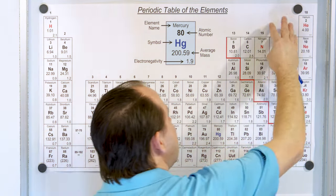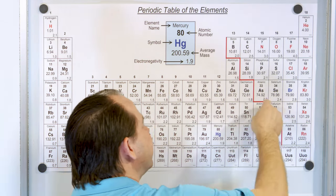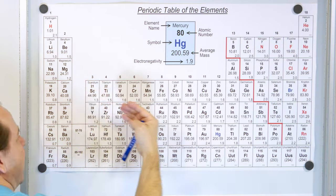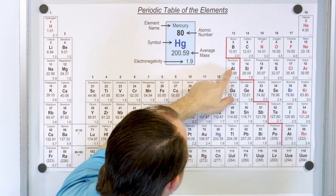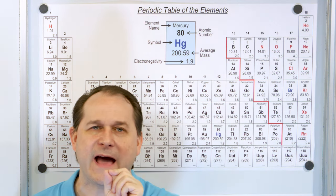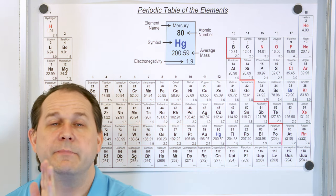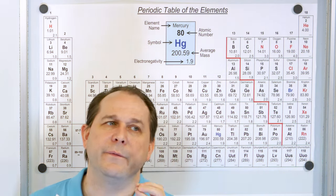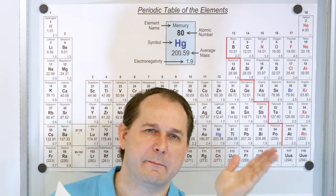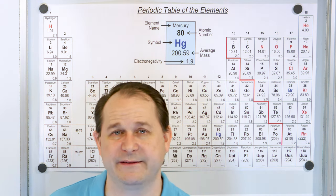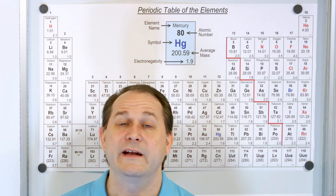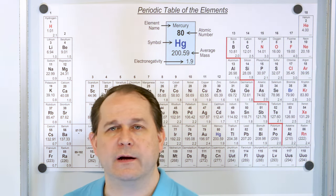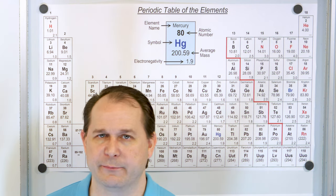Between the metals on the left and the non-metals on the right, there's a little staircase that divides the metal half of the table from the non-metal half. The elements right on the boundary of the staircase have some character of metals but also some character of non-metals — they may conduct electricity to some degree but not as well as gold or copper, and may not be as strong either.